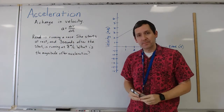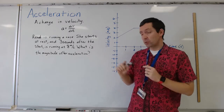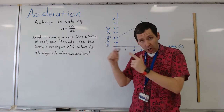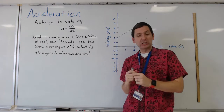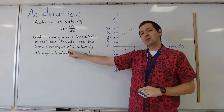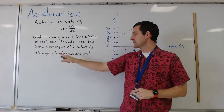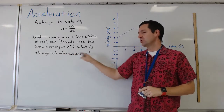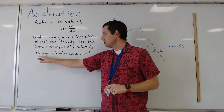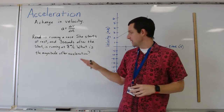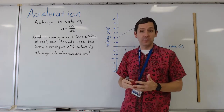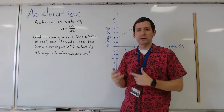Renaud is running a race. She starts at rest. Three seconds after the start — after the gun goes and she starts running — she's now running at eight meters per second. What is the magnitude of her acceleration? Remember, magnitude is just the value, so that means all it's looking for here is the number, the value of the acceleration. We don't need a direction.